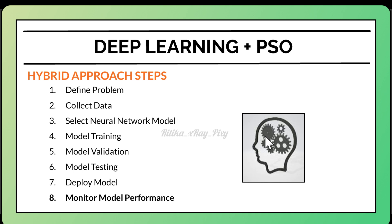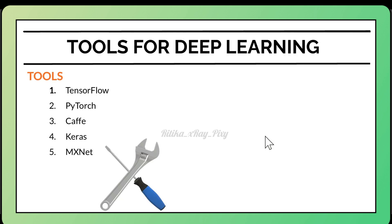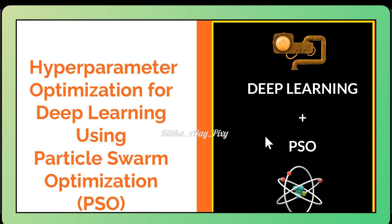Lastly, monitor and maintain the model — continuously monitor its performance and retrain with new data when needed to maintain accuracy and reliability. Useful tools include TensorFlow, an open-source framework developed by Google for machine learning and deep learning tasks, and PyTorch, an open-source machine learning library developed by Facebook AI Research Lab.